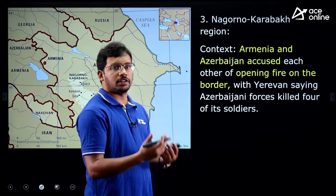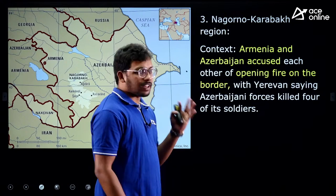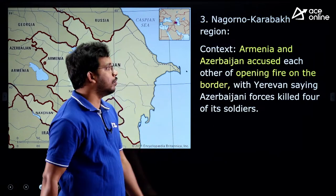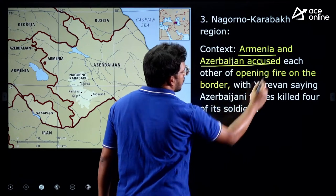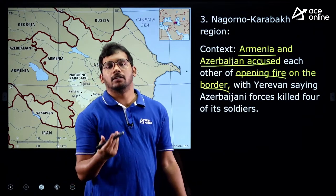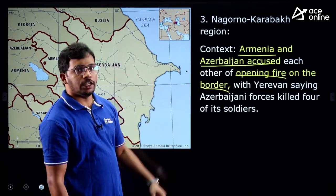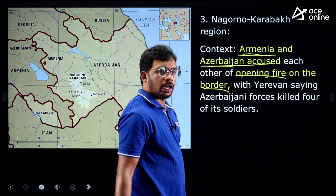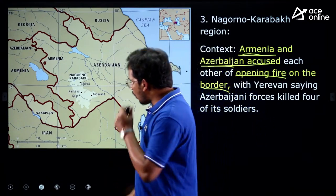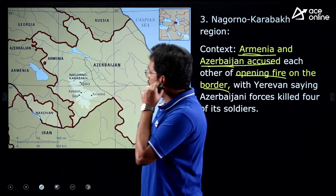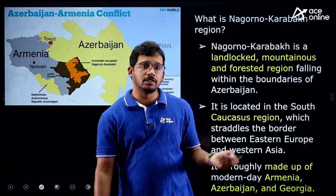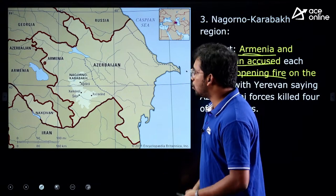The next topic is Nagorno-Karabakh — this has been in the news for many months. Armenia and Azerbaijan have been accusing each other, similar to how India and Pakistan have a border issue. I will explain the whole issue clearly so you will be able to understand the context.